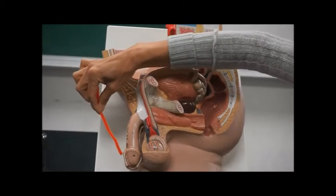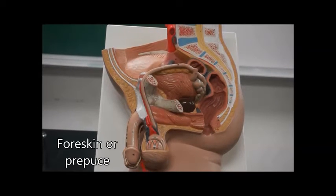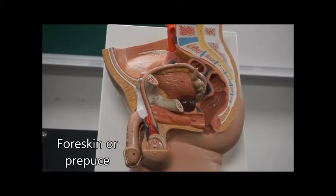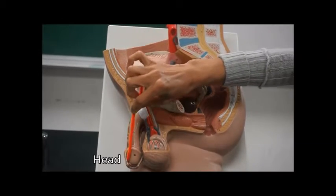This outer region of the penis is a flap of skin. This is either called the foreskin or the prepuce. Removing the foreskin or the prepuce, you see the head of the penis.